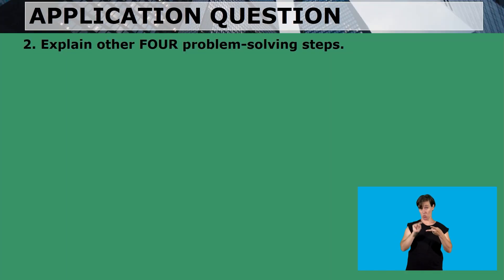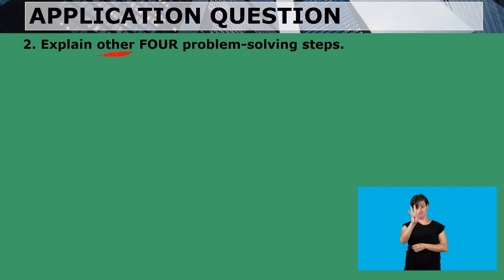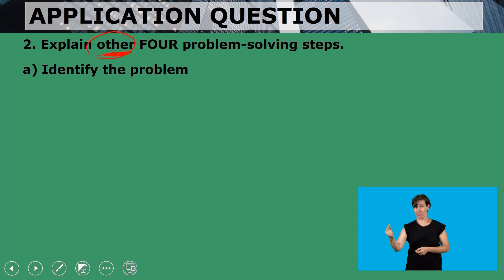We've identified the problem-solving steps and we move on to the next question. The next question says: explain the other four problem-solving steps. The keyword is 'other' — meaning not the ones we mentioned in number one. When explaining the other steps, the first one is: identify the problem.